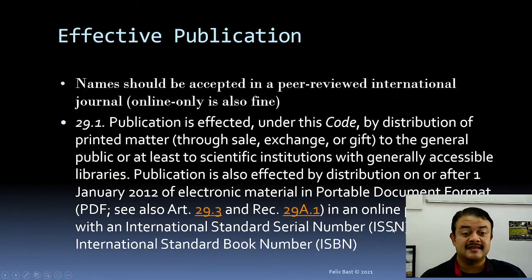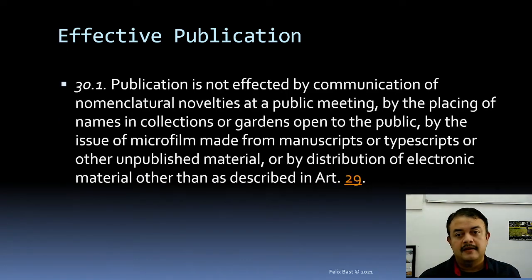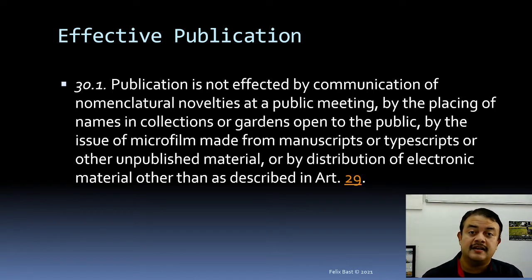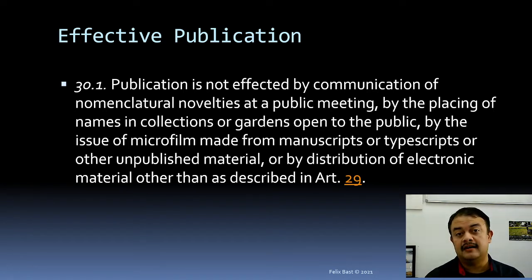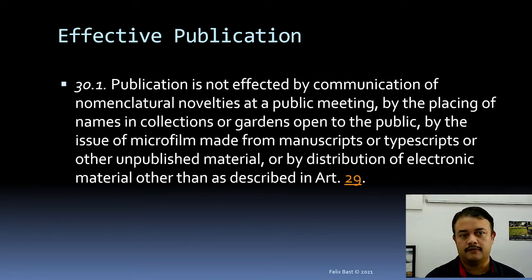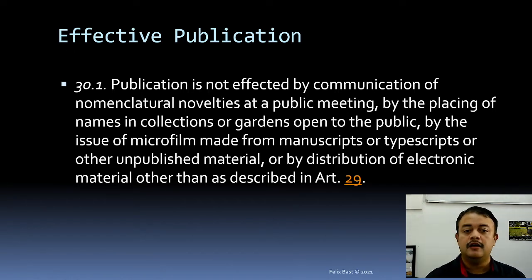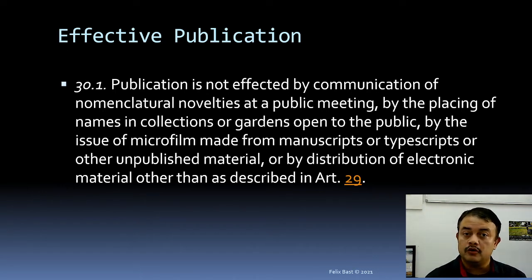If you publish in a book online with an ISSN or ISBN number, that is also effective publication. Rule 30.1 states that publication is NOT effective by communication of nomenclature novelties at a public meeting, placing names in public garden collections or herbaria, issuing microfilm from manuscript, giving a PowerPoint presentation, or distributing electronic material through a Facebook group claiming a new species. It has to be a formal publication.